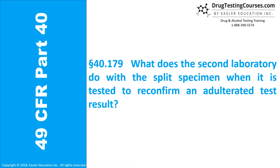Section 40.179. What does the second laboratory do with the split specimen when it is tested to reconfirm an adulterated test result?